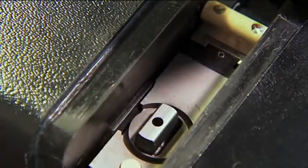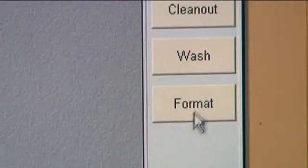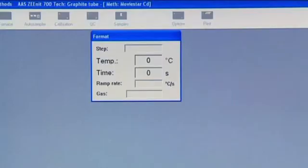Before a measurement series is started and while the furnace is being exchanged, the temperature of the graphite furnace is measured and corrected during a forming routine. By these means, reproducible atomizing conditions are ensured over the whole service life of the furnace.